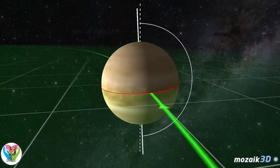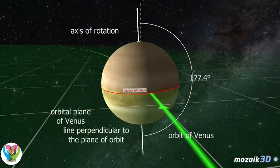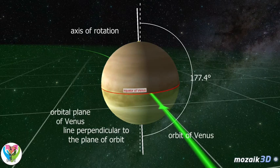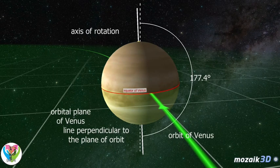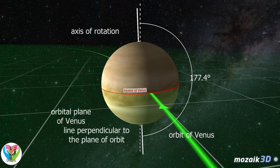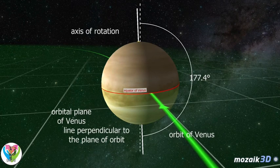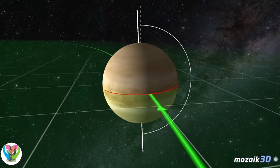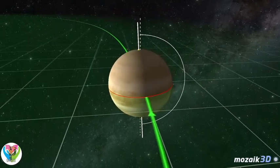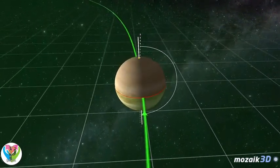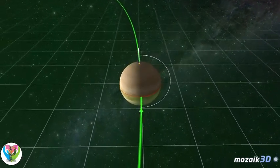Since its axis is nearly perpendicular to the orbital plane, tilted only by 2.6 degrees, there are no seasonal temperature changes on Venus. Due to the strong greenhouse effect, there is no significant difference in temperature between polar and equatorial areas, or between day and night temperatures in the lower atmospheric layers.